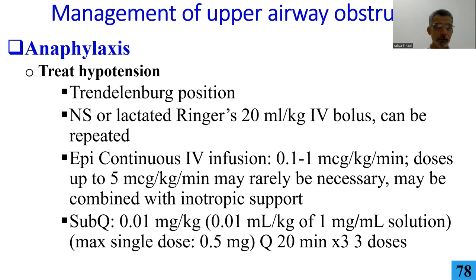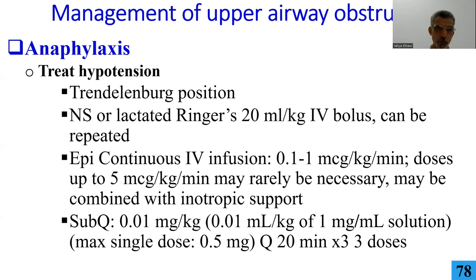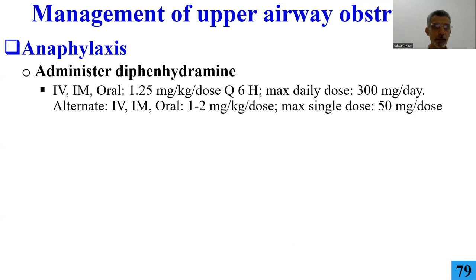When you have anaphylaxis with obstruction, you must know how to ventilate. Anaphylaxis can affect other organs beyond the respiratory system — cardiovascular, GI, CNS. Treat hypotension if present. For anaphylaxis, epinephrine infusion is a very good inotrope because it affects both cardiac output and peripheral vascular resistance — you likely have low systolic and diastolic blood pressure, with pulse pressure remaining constant. You might need to give antihistamine such as diphenhydramine and H2 blocker such as ranitidine.